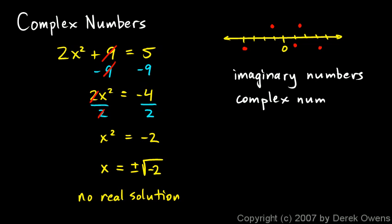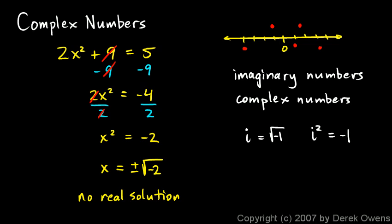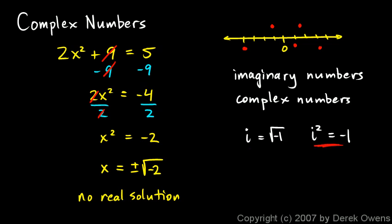I'll explain the difference between those two terms shortly. To deal with numbers that aren't on the real number line, mathematicians define this: i is equal to the square root of negative 1. Or equivalently, i squared is equal to negative 1. These two statements are mathematically equivalent. You define this new number, call it i — where the i stands for imaginary — so it's not a real number. Some textbooks use one definition and some use the other; either is okay. Just remember that i is the square root of negative 1, by definition.